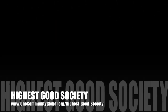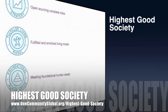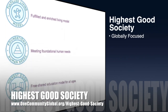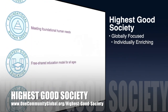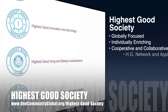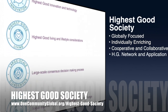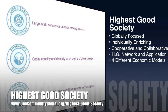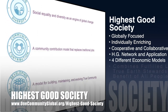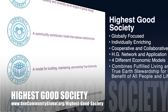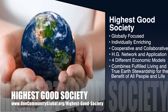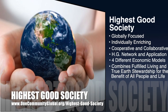The One Community approach to highest good society is globally focused, individually enriching, cooperative and collaborative, includes a highest good network and application, four different economic models, and combines fulfilled living and true earth stewardship for the benefit of all people and all life on this planet.